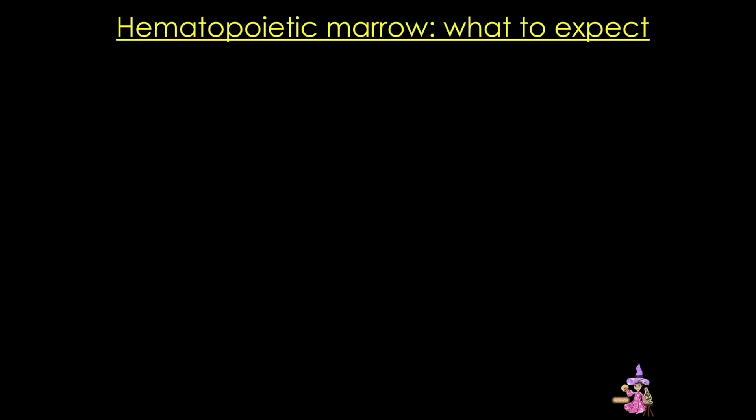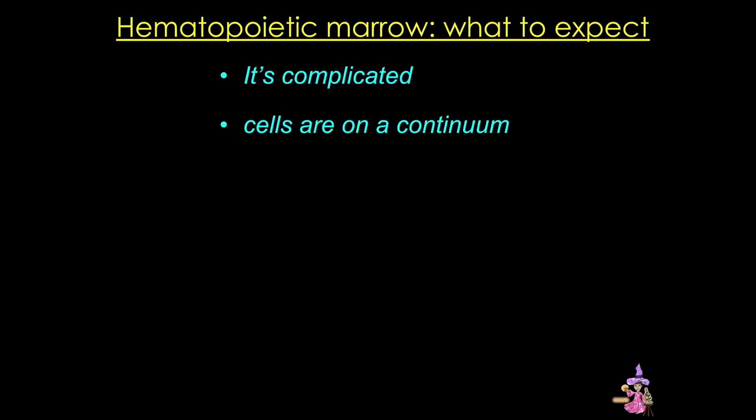In our last tutorial we looked at the lineages of the different blood cells and examined how bone marrow was organized. But bone marrow can look a whole lot like a Where's Waldo puzzle. So how does one go about figuring out what cell is what? Well, one of the first things to remember is that hematopoiesis is complicated, and the second thing to remember is that it's a continuum, so cells are going to be in various stages of development all squished together in that bone marrow niche.